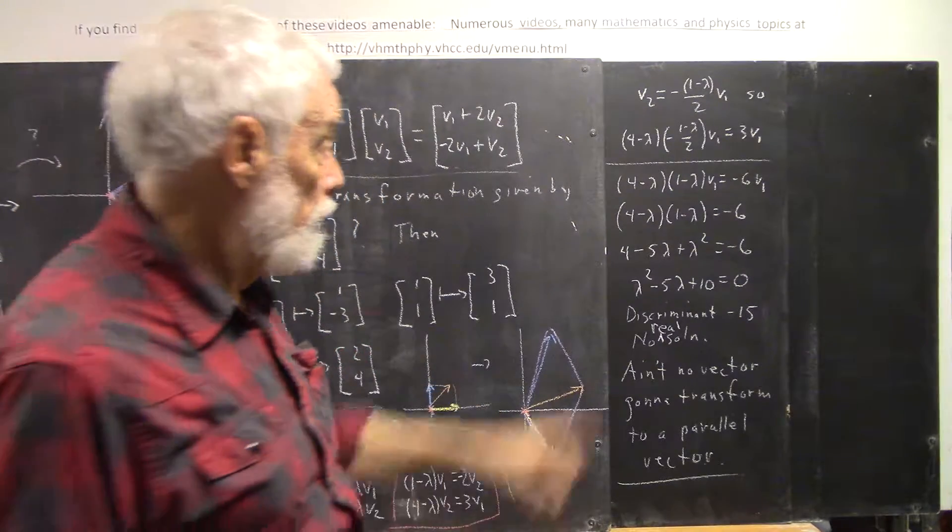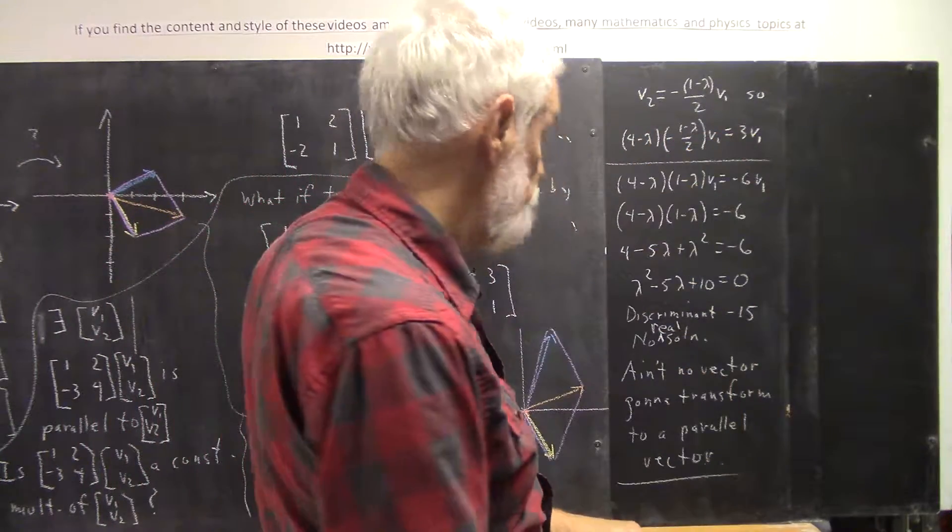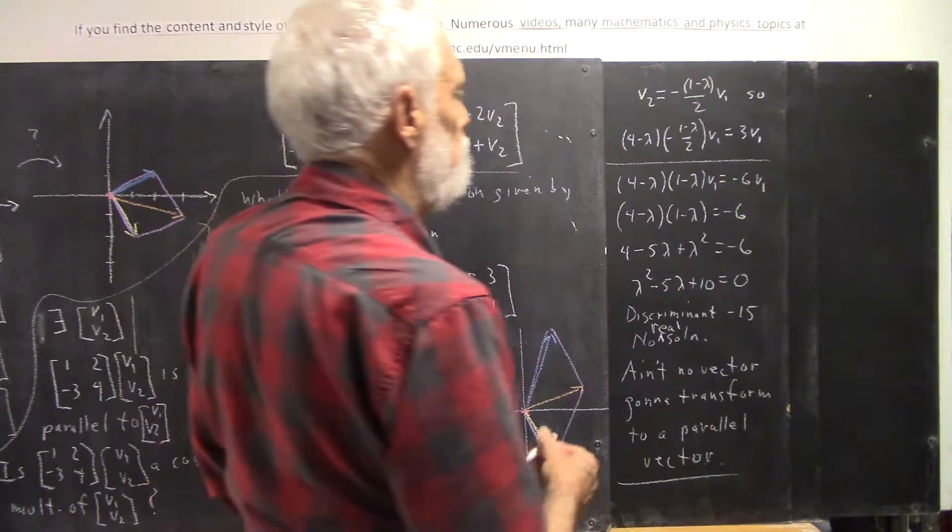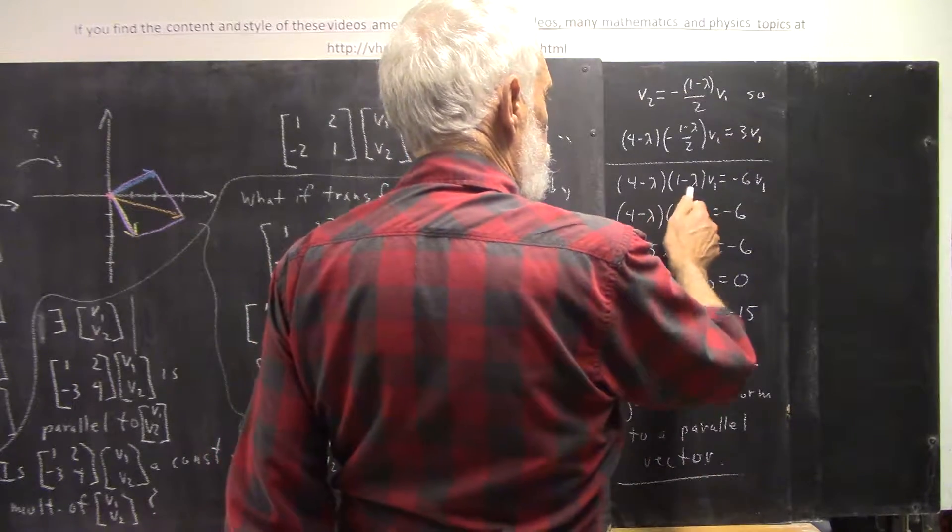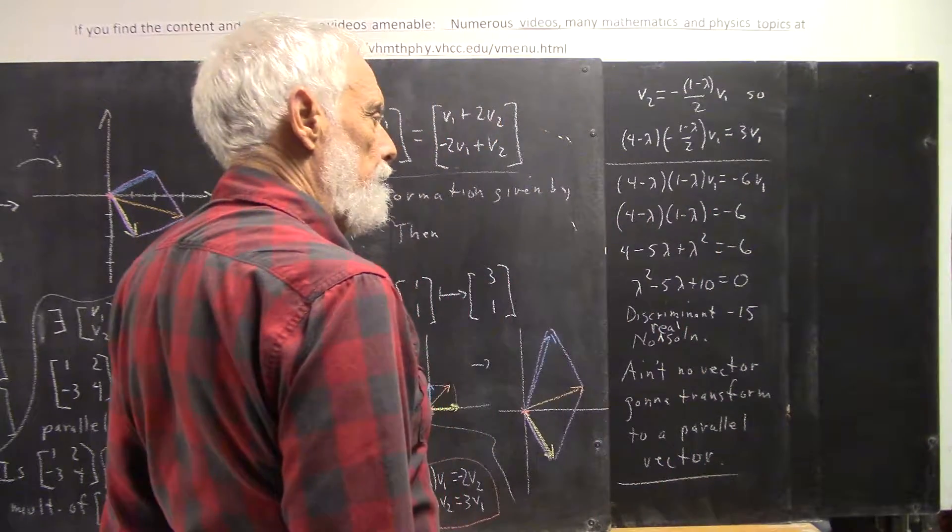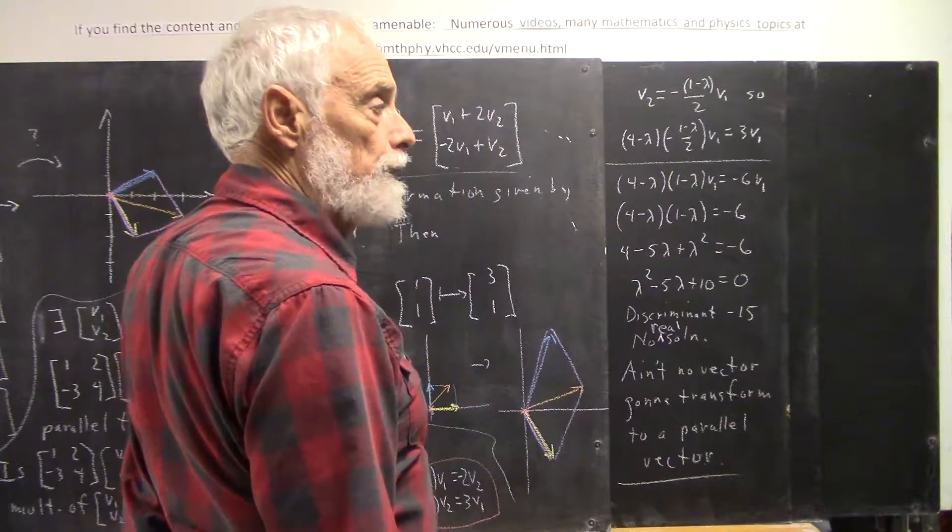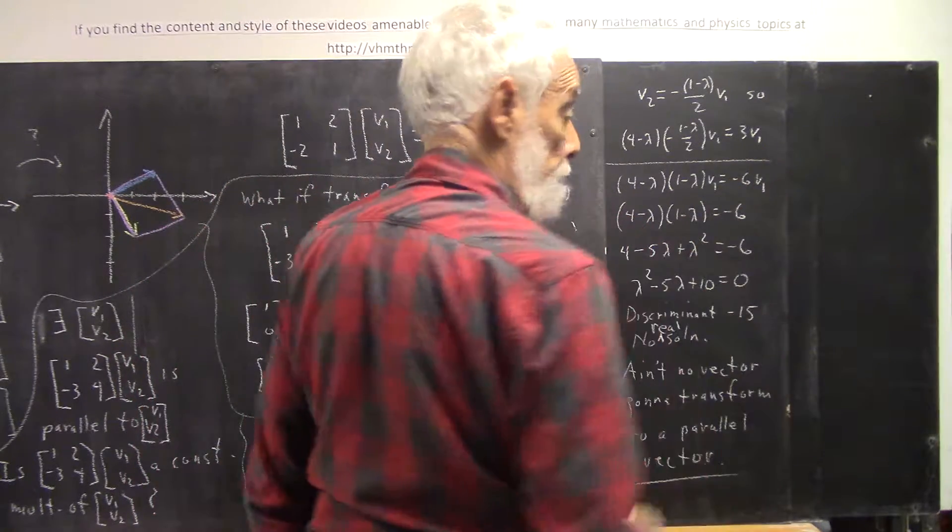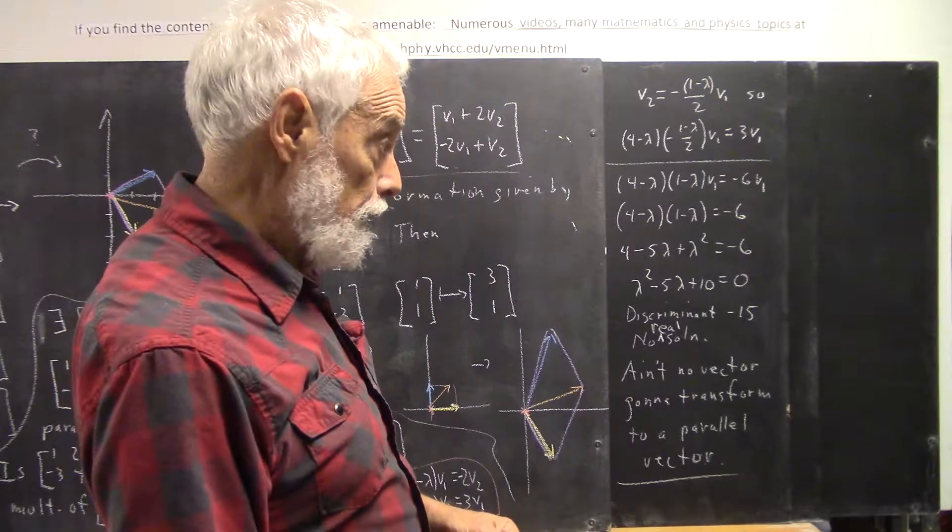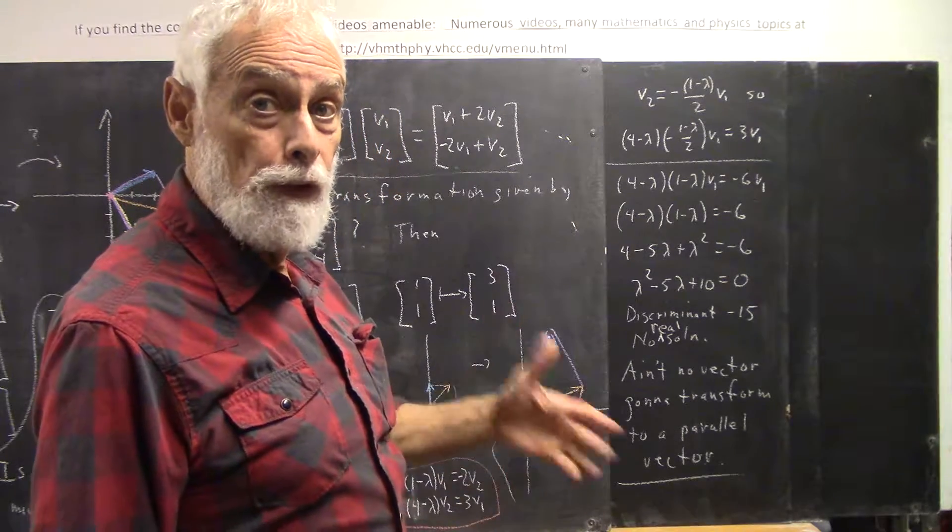We multiply through by negative 2 to get rid of that negative 2, and we have this equation. Now, an obvious thing we can do to simplify this equation is we can divide through by v1. Now, this actually indicates that it doesn't matter a bit what v1 is.